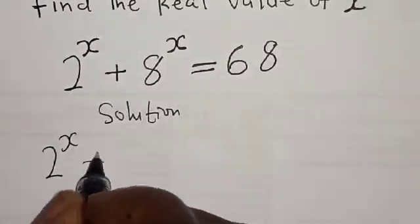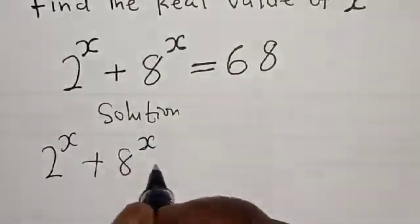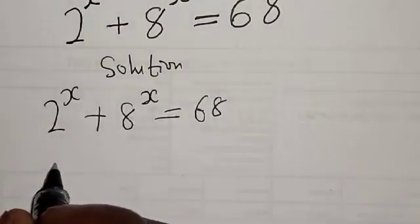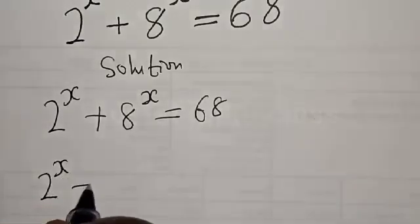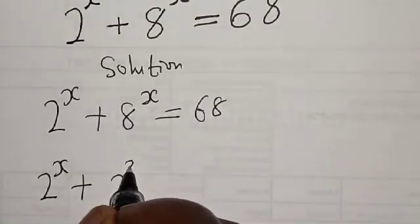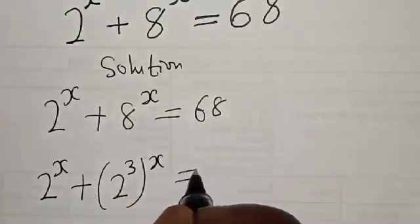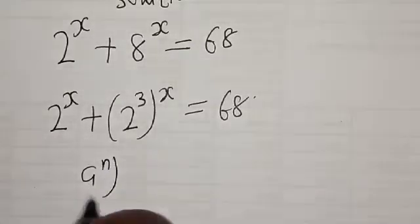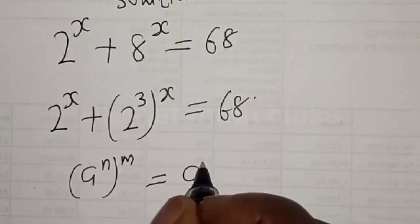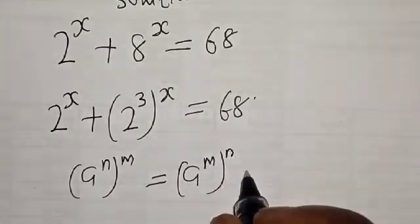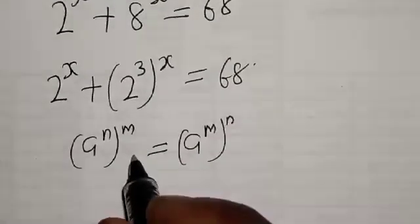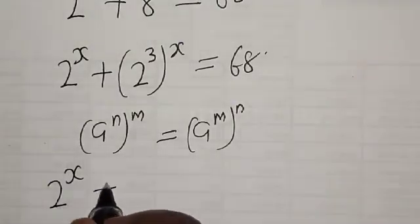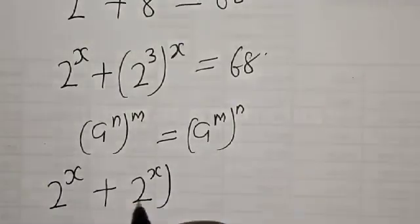Solution: we have the given equation 2 raised to power x plus 8 raised to power x is equal to 68. Then we have 2 raised to power x plus 2 raised to power 3, raised to power x, is equal to 68. Now remember, if you have a raised to power n raised to power m, it is the same as a raised to power m raised to power n. Then this 2 raised to power 3 will now be rewritten — we have 2 raised to power x plus 2 raised to power x, raised to power 3.